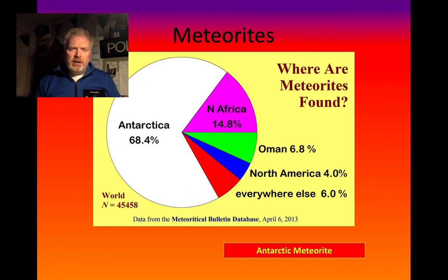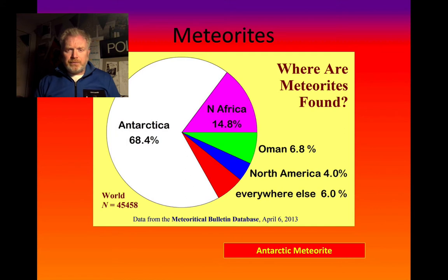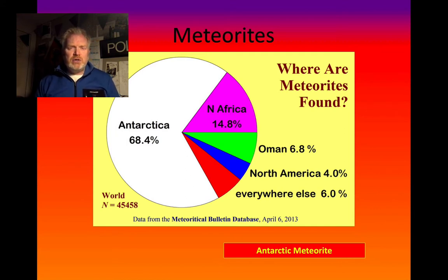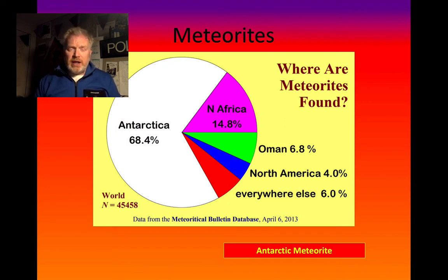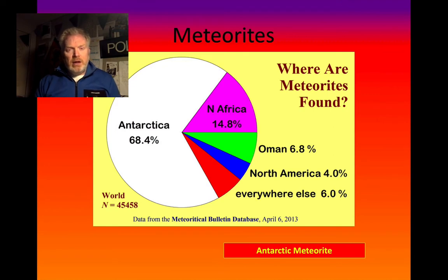In particular, places where we find meteorites are Antarctica, North Africa, and Oman. 90% of the world's meteorites are found in those locations, because in places that are either covered in ice and snow, like Antarctica, or that are deserts, like North Africa or Oman, it's easier to spot the rocks that don't fit in. In other places, they can be really hard to identify.